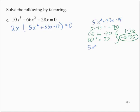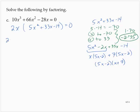5x squared minus 2x plus 35x minus 14, grouping x by 5x minus 2 plus 7 by 5x minus 2. So that's 5x minus 2 by x plus 7. Bringing that back up to the equation, I would have 2x times 5x minus 2 by x plus 7 is equal to 0.